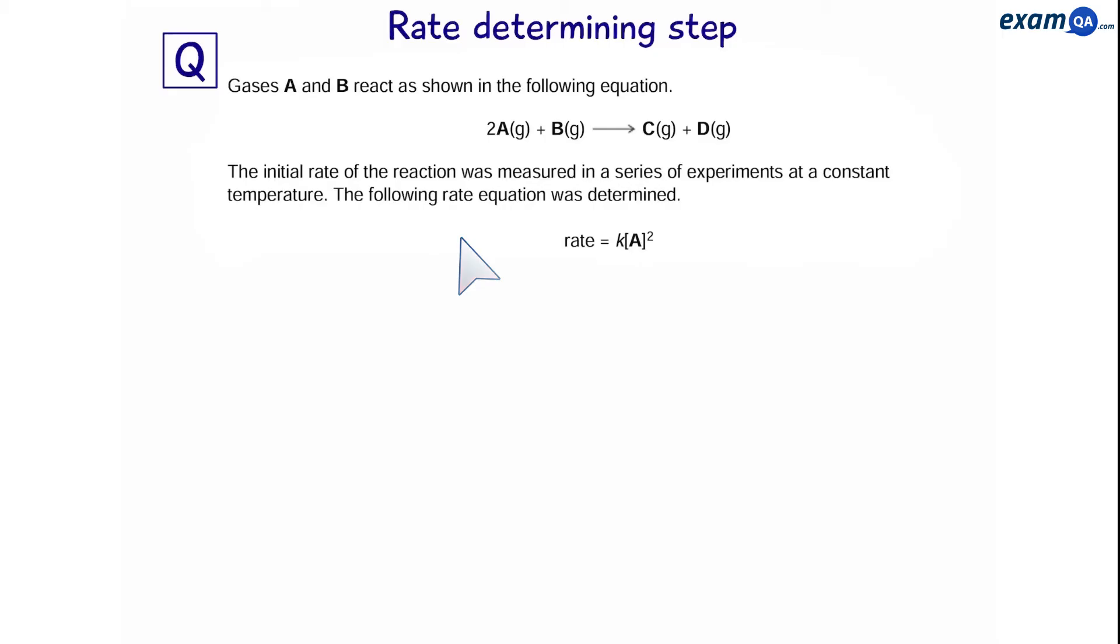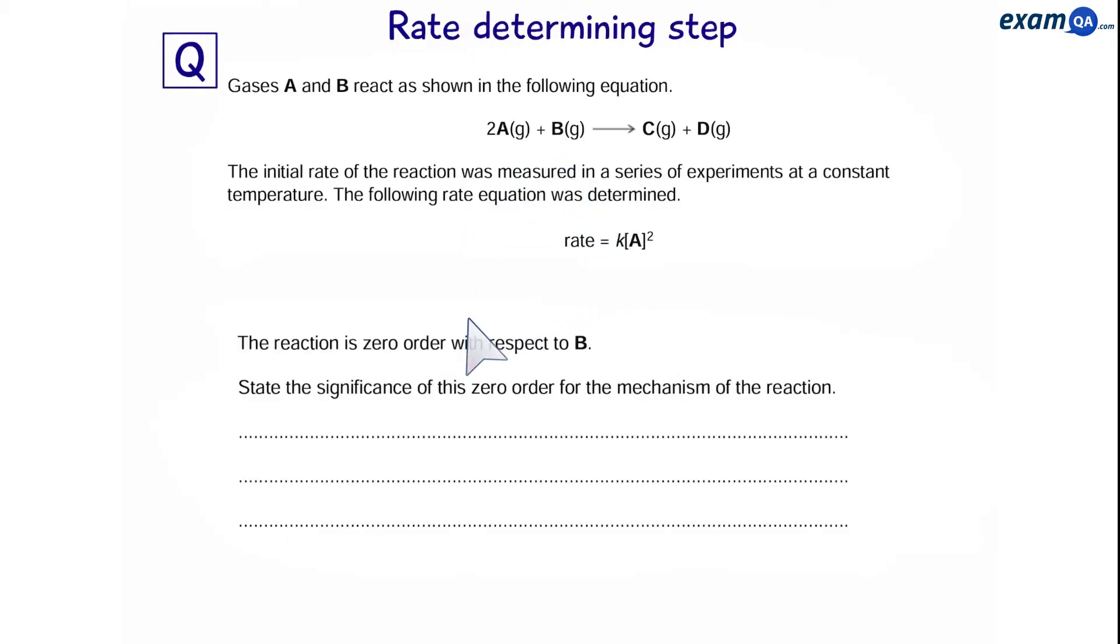Okay, let's try some exam style questions. If you want, you can pause the video. So, we've been given the equation and the rate equation. The reaction is zero order with respect to B. State the significance of zero order for the mechanism of the reaction.